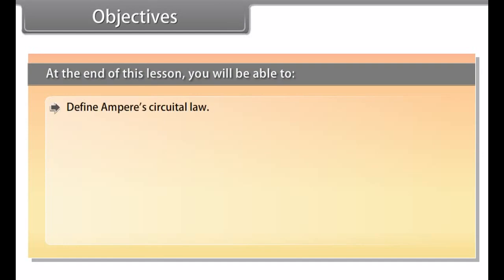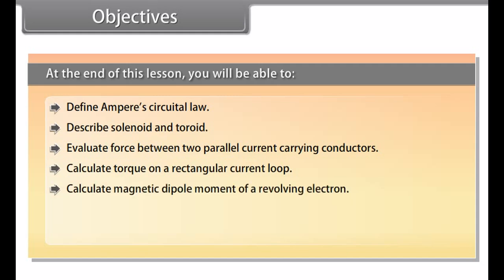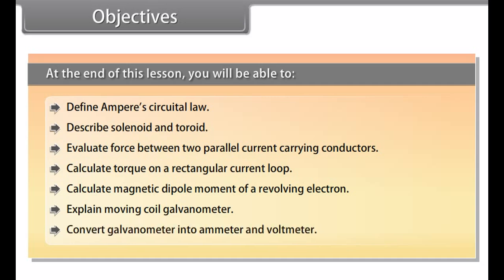At the end of this lesson, we'll be able to: Define Ampere's Circuital Law; describe solenoid and toroid; evaluate force between two parallel current carrying conductors; calculate torque on a rectangular current loop; calculate magnetic dipole moment of a revolving electron; explain moving coil galvanometer; and convert galvanometer into ammeter and voltmeter.